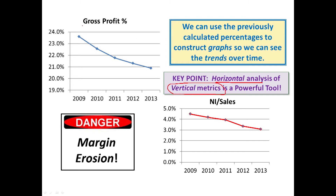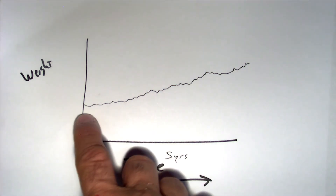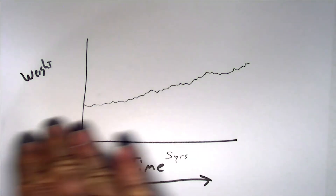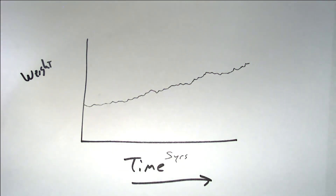Perhaps you see that gross profit percentage is declining over time, or if you do net income divided by sales, it is declining over time. This is horizontal analysis over time of a vertical measurement.